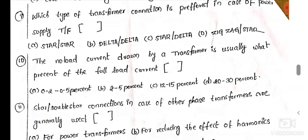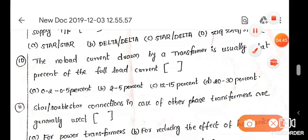The no-load current drawn by a transformer is usually what percent of the full load? In general, no-load current is only magnetizing current, that is 2 to 5 percent.